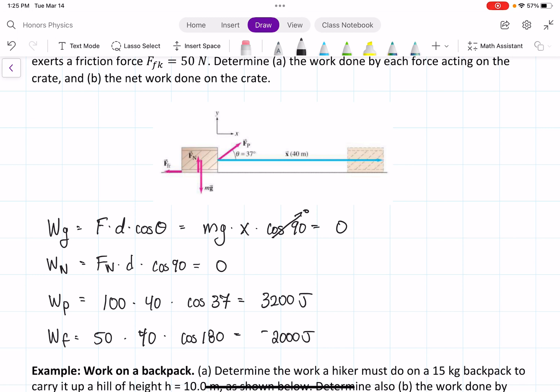So that's the work done by each force. If we want to find the net work, we just add all of these up. So if we add 0 plus 0 plus 3200 minus 2,000,